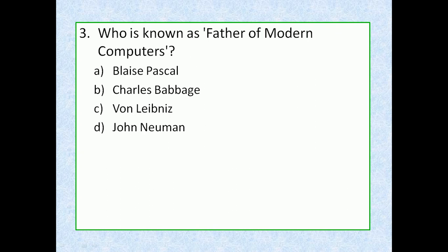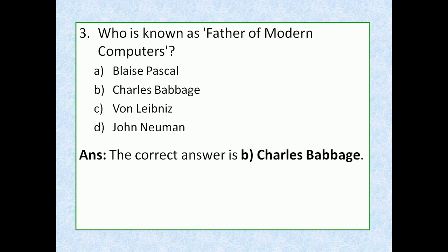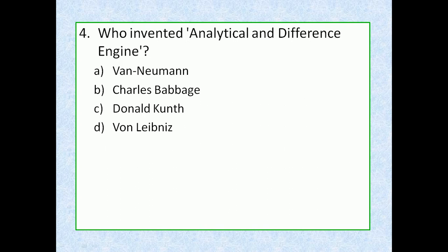Question 3: Who is known as the father of modern computers? Option A: Blaise Pascal, option B: Charles Babbage, option C: Von Neumann, option D: John Newman. The correct answer is option B, Charles Babbage. He was an English mathematician widely considered the father of modern computers, best known for his work on the analytical engine, a general-purpose mechanical computer that was never fully completed but laid the foundations for the modern computer.